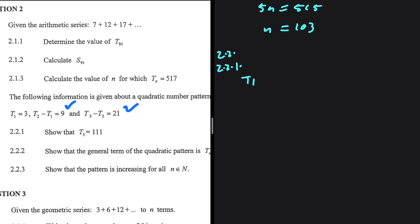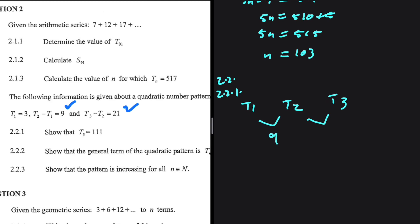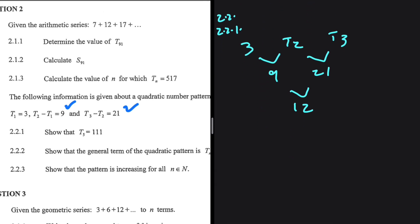So T1, T2, and T3. T2 minus T1 is 9. And T3 minus T2 is 21. 21 minus 9 is 12. But we have the value of T1. So instead of putting T1 there, let's put T3. We know that T1 equals 3.